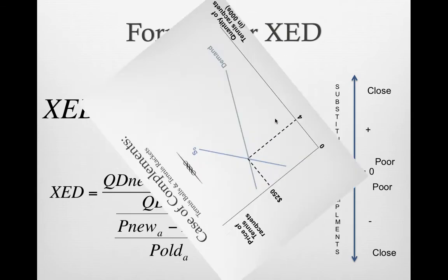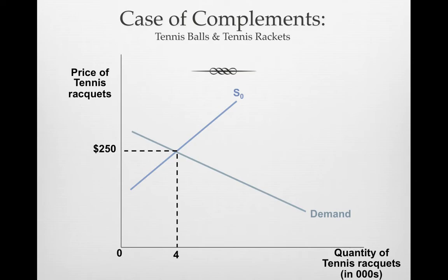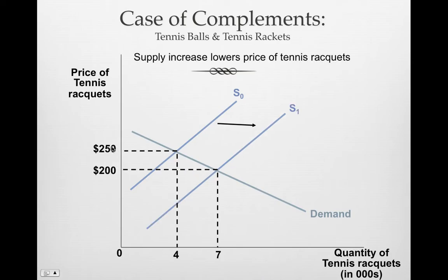Let's look at a real-world example with two complementary goods: tennis balls and tennis rackets. Suppose the supply curve for tennis rackets shifts to the right — maybe carbon fiber used in the rackets gets cheaper. The price of tennis rackets drops, so they're cheaper and people are buying more of them. Previously it was $250 and 4,000 rackets; now it's $200 and people are buying 7,000 rackets. So the price of one good dropped and people are buying a larger quantity — a movement along the demand curve due to a shift in supply.